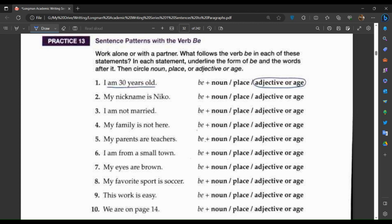Practice 13: sentence patterns with the verb be. Work alone or with a partner. What follows the verb be in each of these statements? In each statement, underline the form of be and the words after it. Then circle noun, place, or adjective or age. I am 30 years old. My nickname is Nicu. It is a noun. I am not married. It's an adjective.